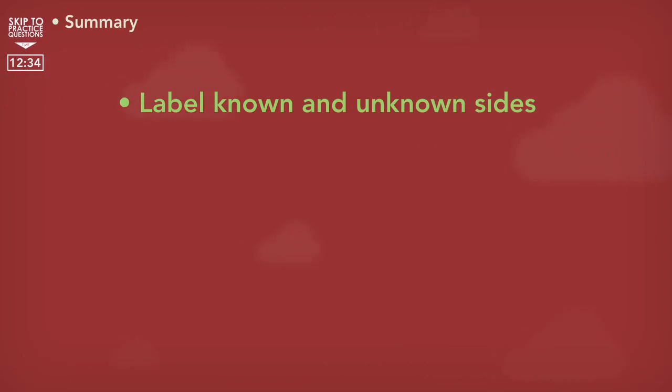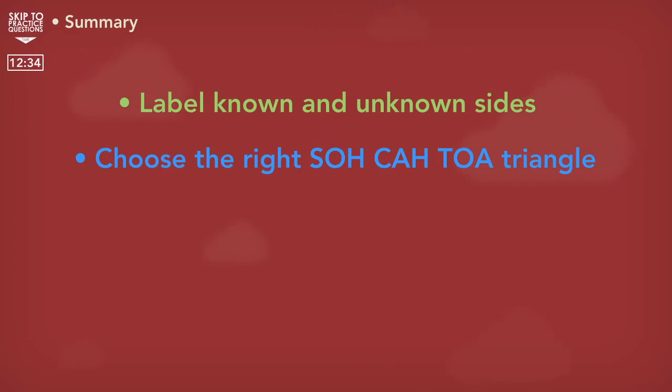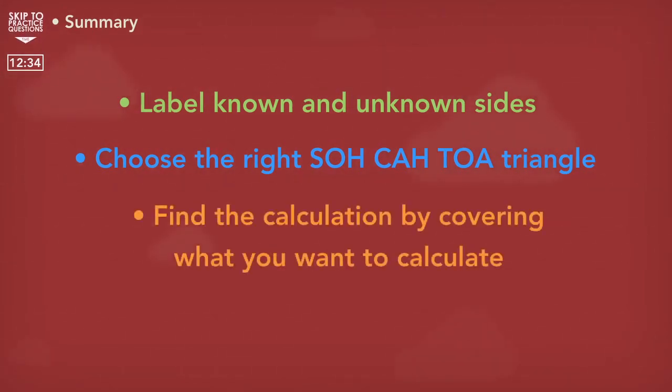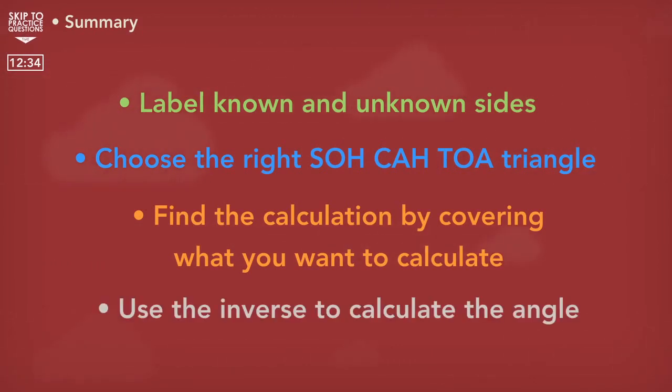So to summarize, if you're looking for a missing angle or length on a right angle triangle, you need to do the following: correctly label the different sides of the triangle. Use the items you know and the items that you are looking for to choose the triangle with the correct calculations on SOHCAHTOA. Cover the side or angle on the triangle that you are looking for to reveal the correct calculation. If you're trying to find the angle, remember to use the inverse button on your calculator for sine, cos or tan. And that's it.